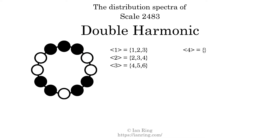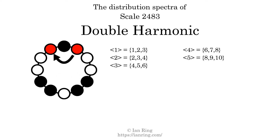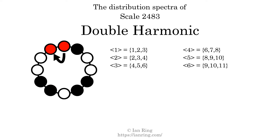The generic interval of 4 scale steps comes in 3 specific interval sizes: 6, 7, and 8 semitones — spectrum width 2. The generic interval of 5 scale steps comes in 3 specific interval sizes: 8, 9, and 10 semitones — spectrum width 2. The generic interval of 6 scale steps comes in 3 specific interval sizes: 9, 10, and 11 semitones — spectrum width 2.